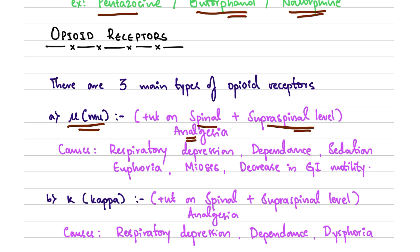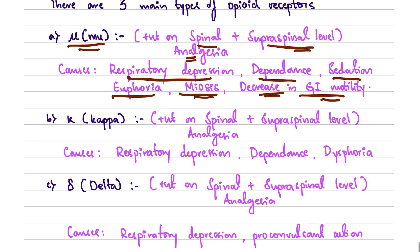Acting on the mu receptor causes respiratory depression, dependence, sedation, euphoria, miosis, and decreased GI motility. The second type of opioid receptor is kappa (k), which is also present at the spinal and supraspinal level and produces analgesia at both levels.